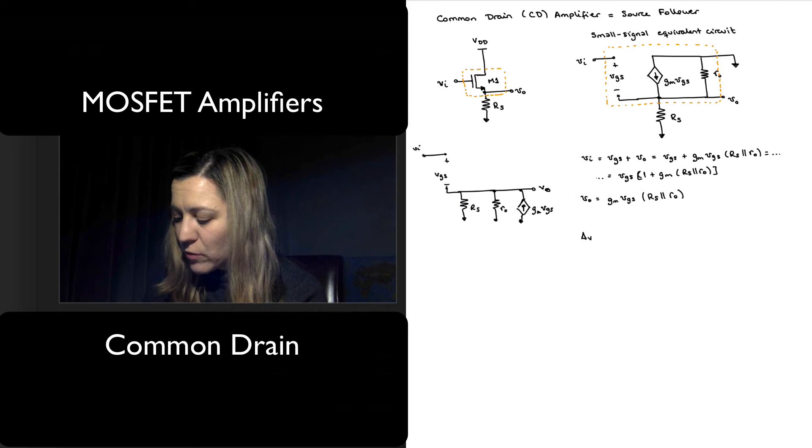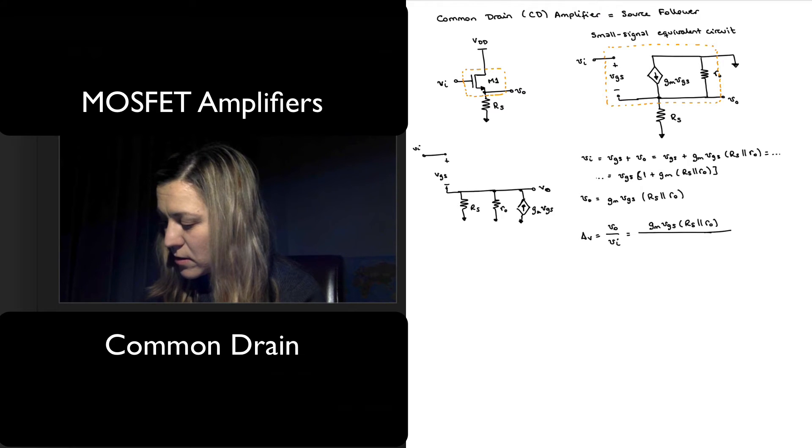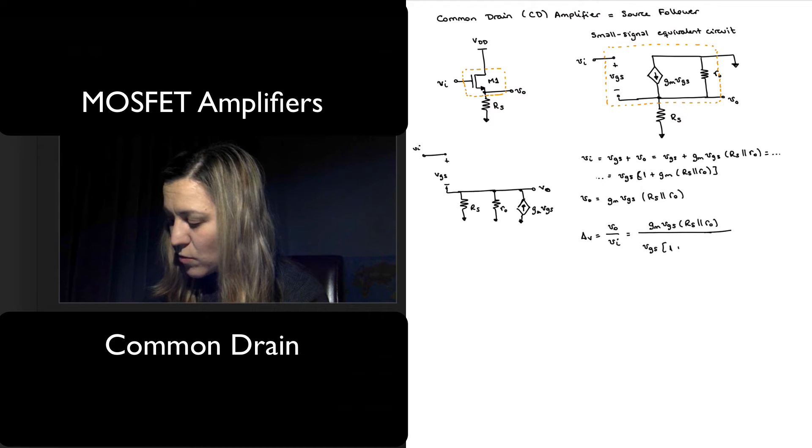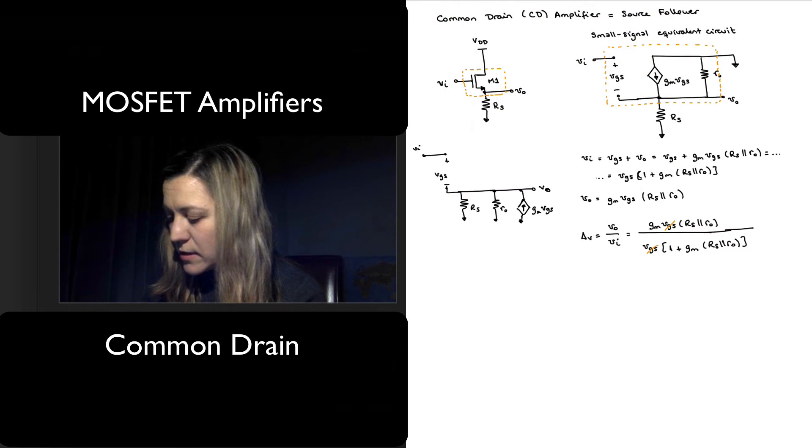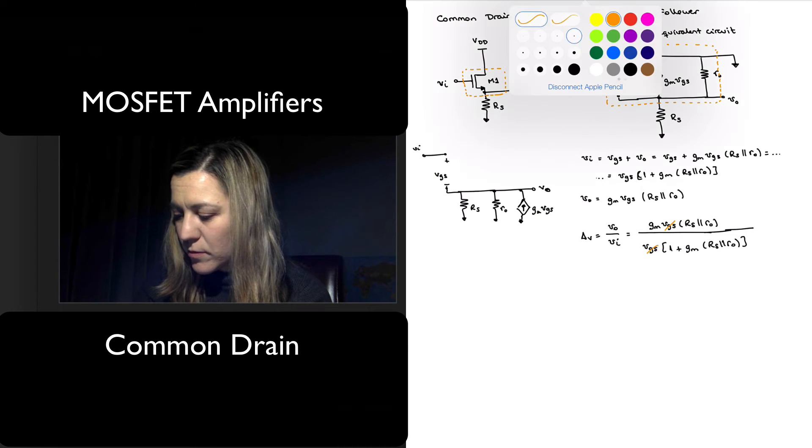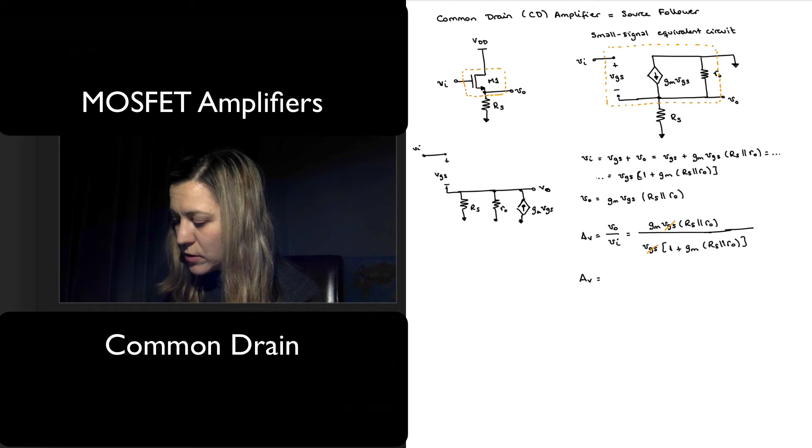Now the expression for my voltage gain, which will be V_out over V_in, is essentially g_m V_GS (R_S in parallel with r_out) divided by V_GS times (1 plus g_m R_S in parallel with r_out). We can cancel out the V_GS, giving us g_m (R_S in parallel with r_out) divided by (1 plus g_m R_S in parallel with r_out).